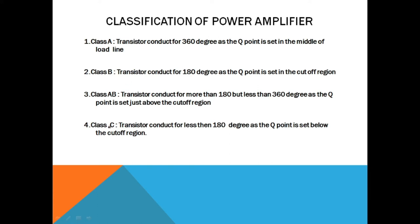This classification of the power amplifier is based on the position of the Q-point. In class A, the Q-point is located in the middle of the load line, meaning your transistor is conducting for 360 degrees. In case of class B power amplifier, the Q-point is adjusted or located in the cut-off region.